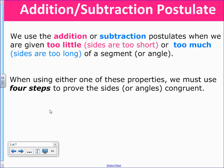When using either one of these, either the addition or the subtraction postulate, we must use four steps to prove the sides or the angles are congruent.